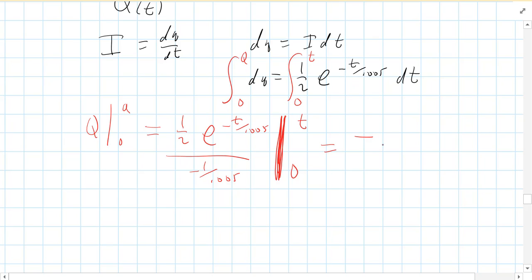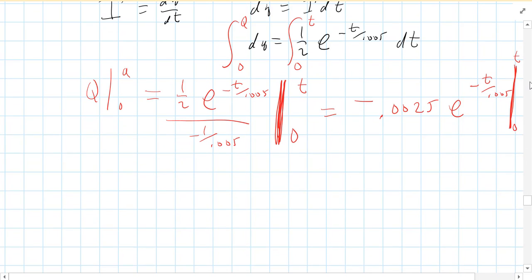So if we simplify that down, we get negative. It's 0.005 times a half, which is negative 0.0025 E to the negative T over 0.005. And we have to evaluate that from zero to T. So we end up with Q equals, if I plug in T, I get negative 0.0025 E to the negative T over 0.005 minus negative 0.0025. And if I plug in zero, what's E to the zero? Well, that's just one.